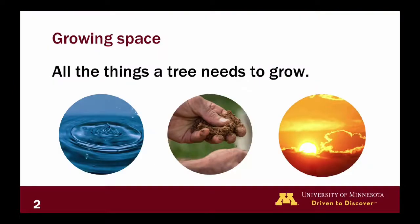So what exactly is growing space? Growing space is the sum of all the factors a tree needs to grow. Some of these factors are part of the physical environment — we can think about water or nutrients. Some of these factors are more abstract and represent site or space. But growing space is this all-encompassing idea of the sum of all the factors that a tree needs to grow.